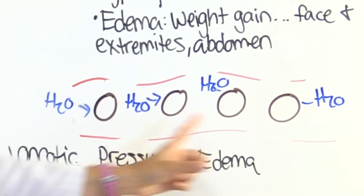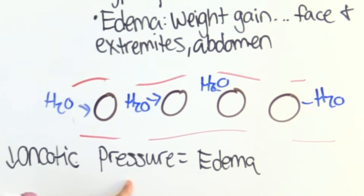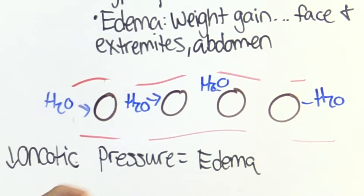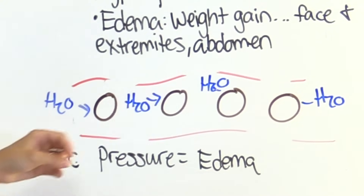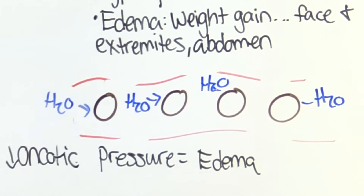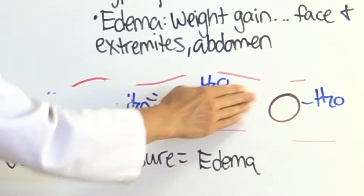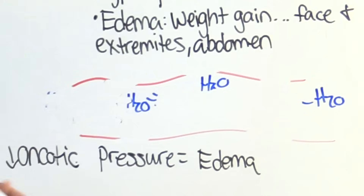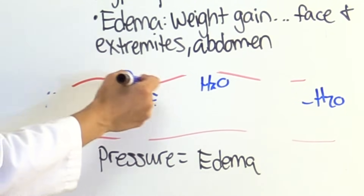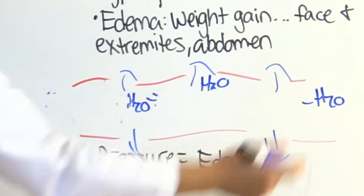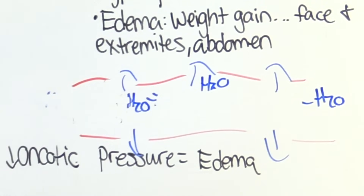Why does low albumin cause so much fluid to go into the interstitial tissue, presenting as edema? Albumin plays a very important role in regulating oncotic pressure. In a capillary, which has fenestrations — little pores — albumin acts like a magnet with water, regulating how much water flows out of the capillary into the interstitial tissue. When albumin levels drop, water has nothing to keep it in the capillary, so it flows out into the interstitial tissue, causing the visible swelling.